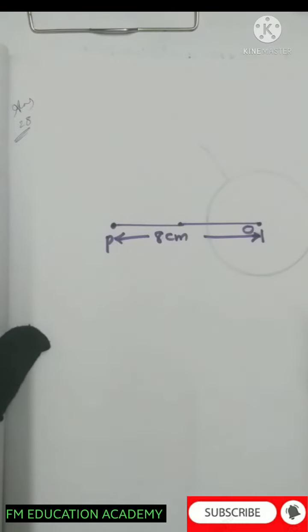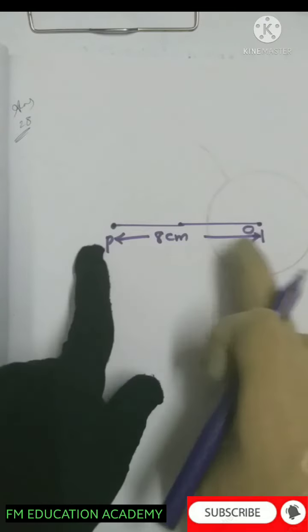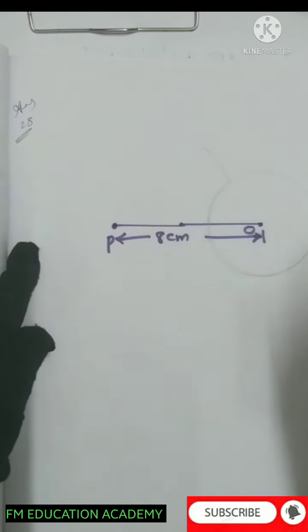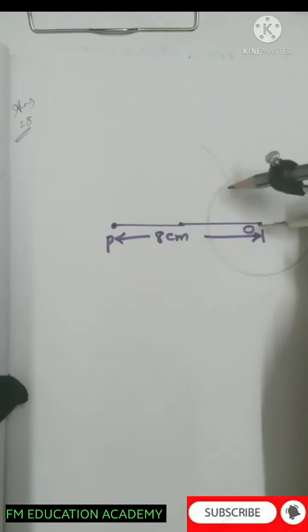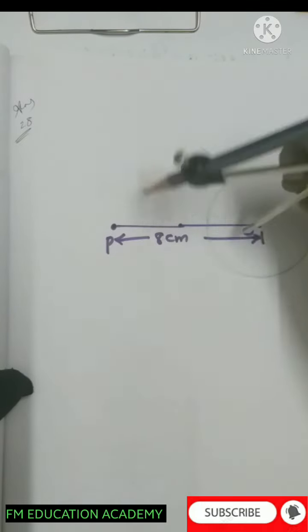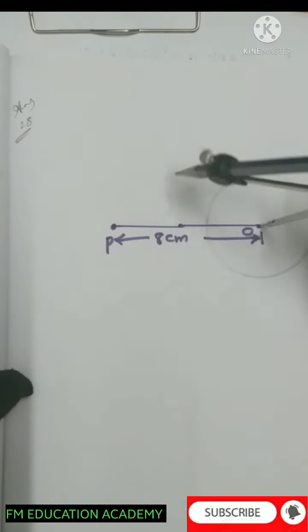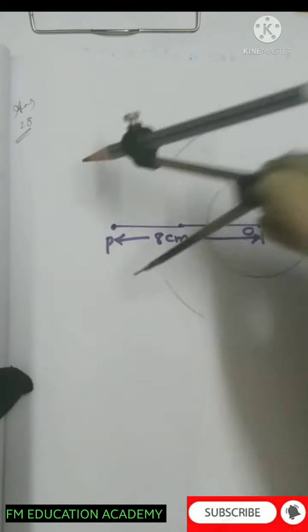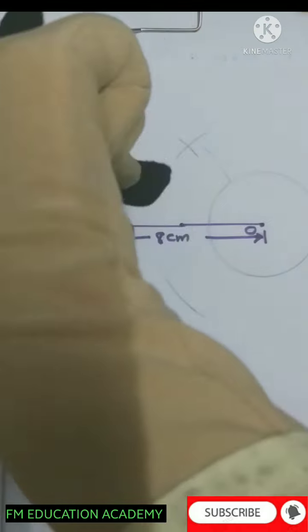Now, how to draw the pair of tangents? Here is a hint: if the distance from the center to a point is given, always construct a perpendicular bisector — that is the first step. The perpendicular bisector is constructed by placing arcs above and below. Since the total distance is 8 centimeters, take more than half on the compass, meaning more than 4 centimeters, and draw two arcs from P and from O, both above and below.